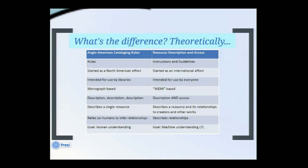Humans have to make the connections between the author and the title. Resource Description and Access refers to itself as instructions and guidelines, leaving a lot of room for cataloger's judgment. It started as an international effort, intended for use by everyone — though whether museums and archives actually adopt RDA, we have yet to see. It is WEMI-based, built around relationships between Work, Expression, Manifestation, and Item. Its ultimate goal is machine understanding — though I'd question whether RDA is fully there yet.